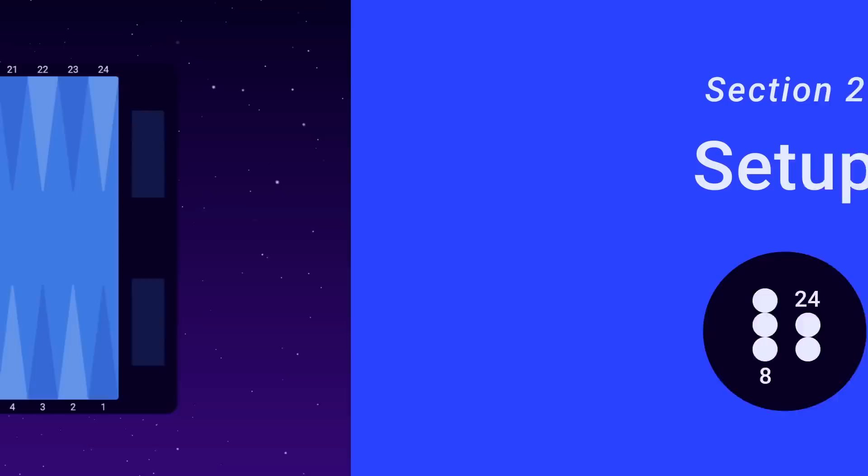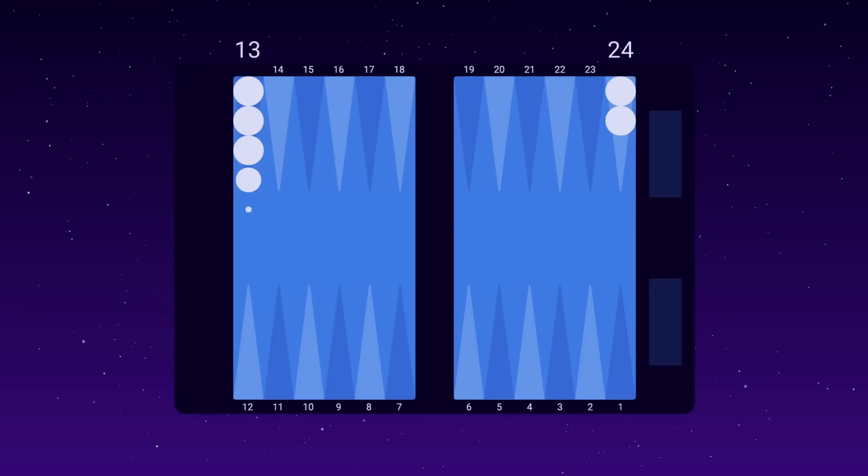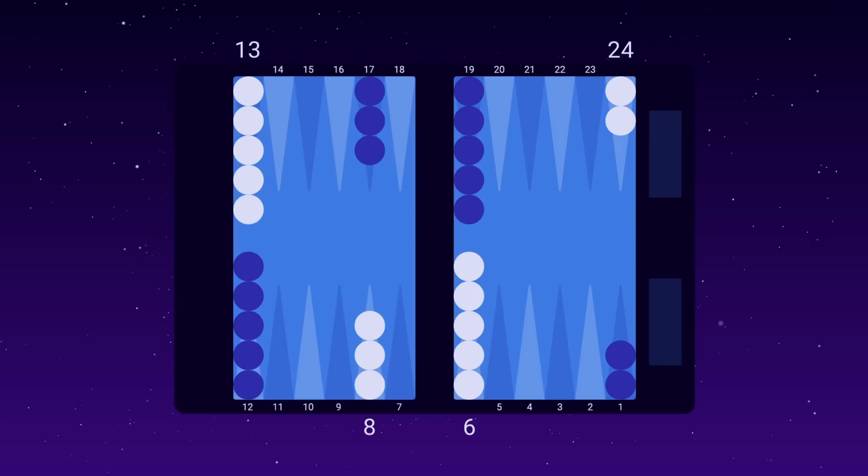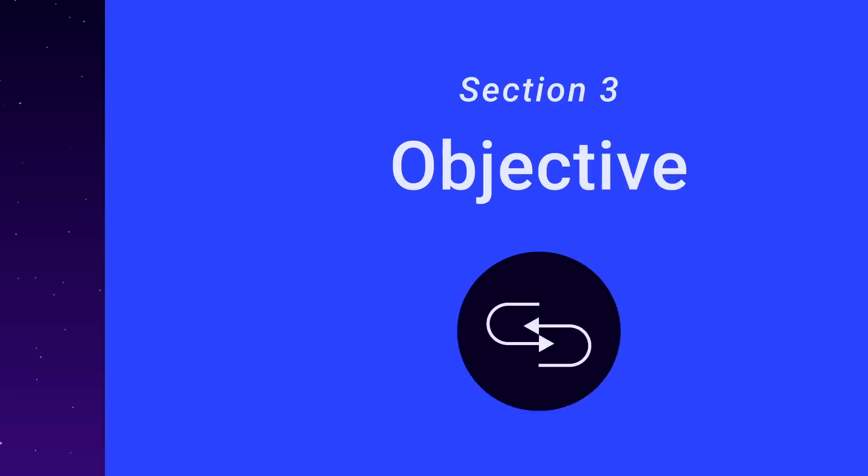Section 2. Setup. White player has two checkers on 24, the backmost checkers, five checkers on 13, the midpoint, three checkers on 8, and five checkers on 6. Blue's checkers are placed opposite of white's. White moves counterclockwise, and blue moves clockwise.